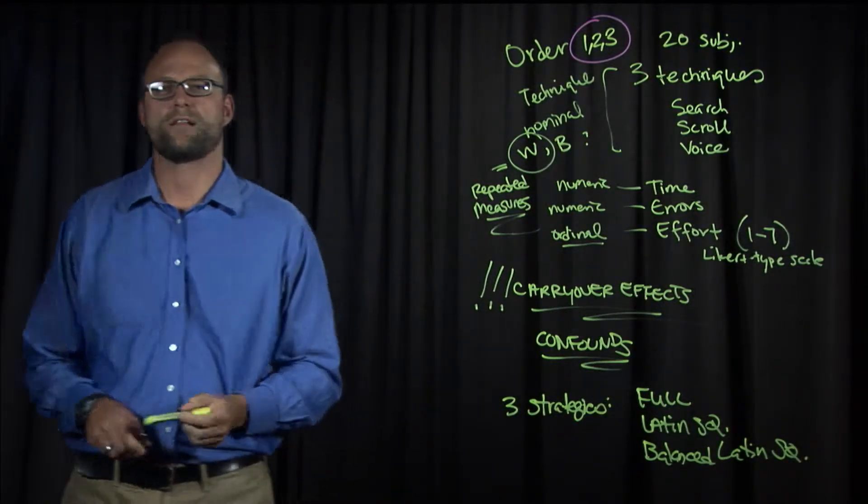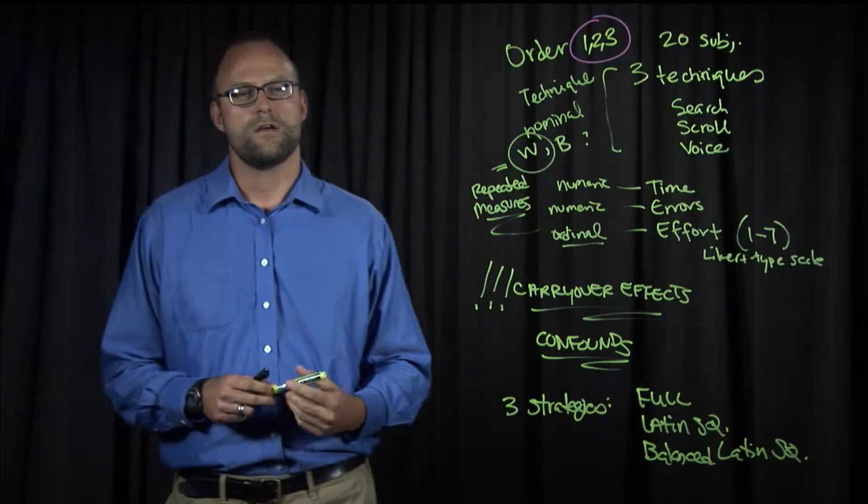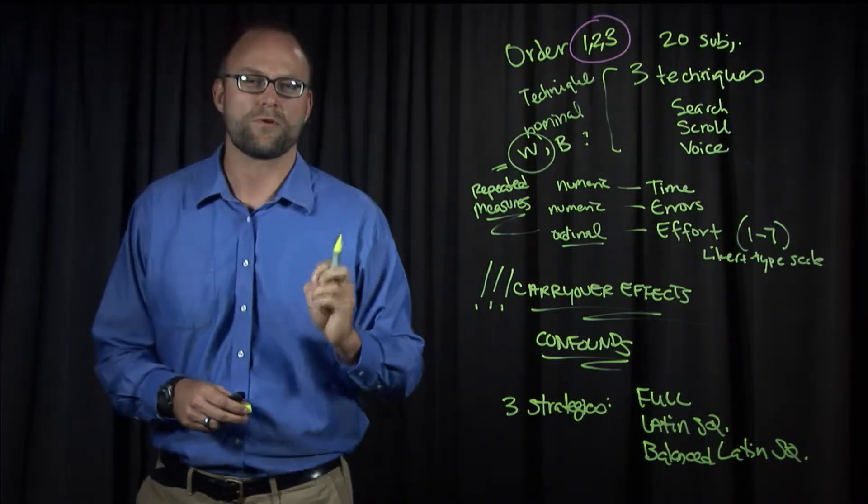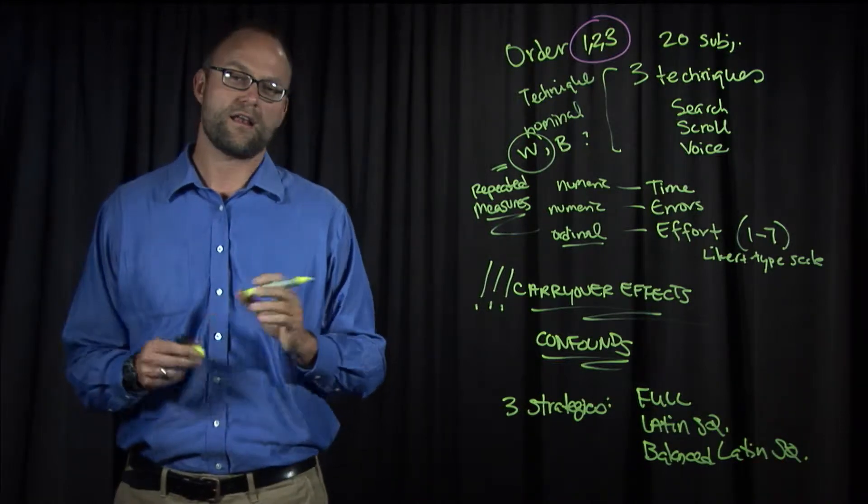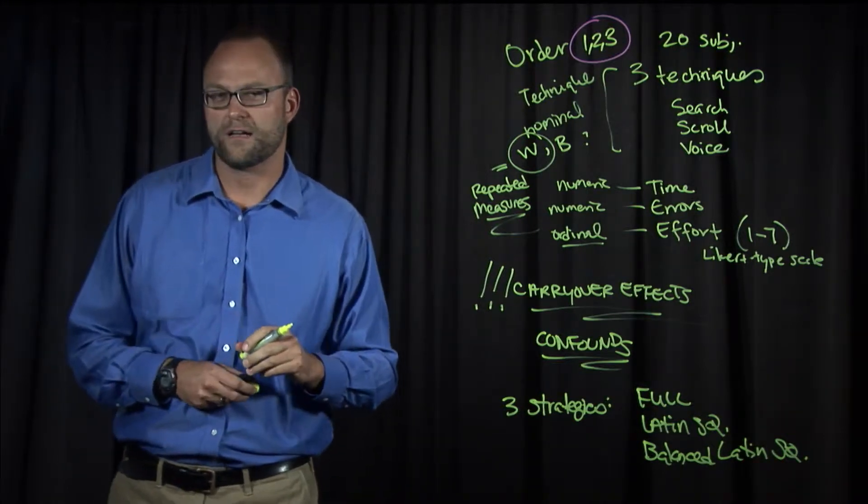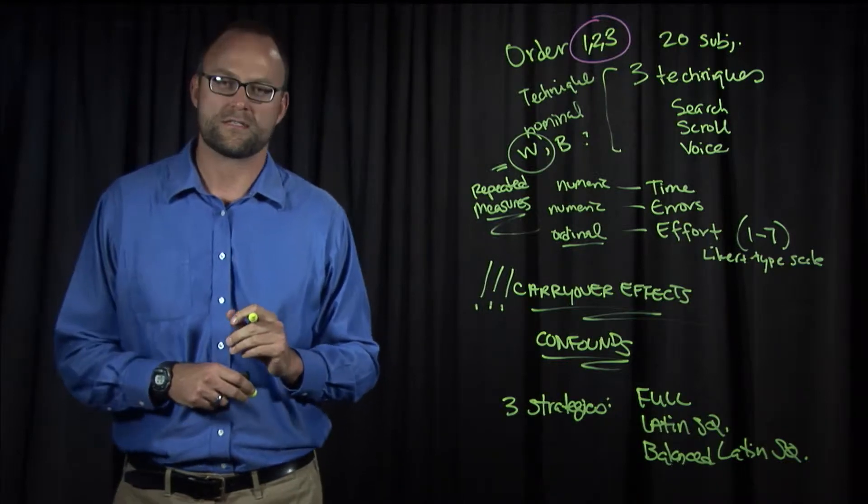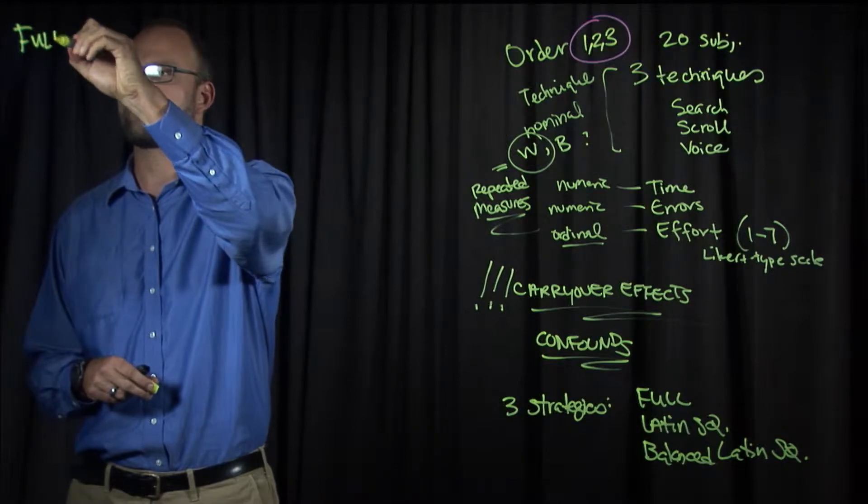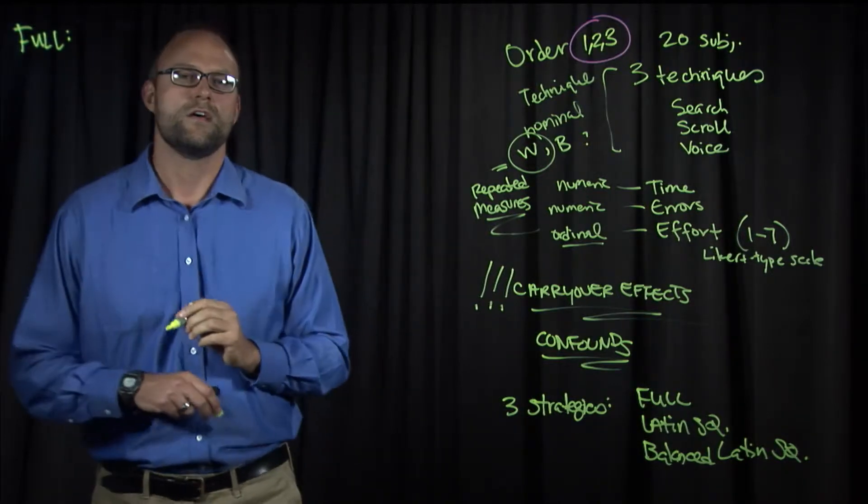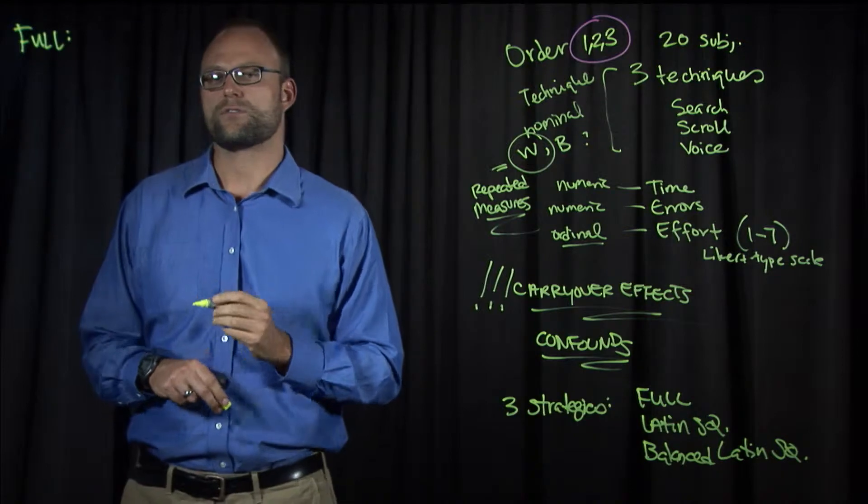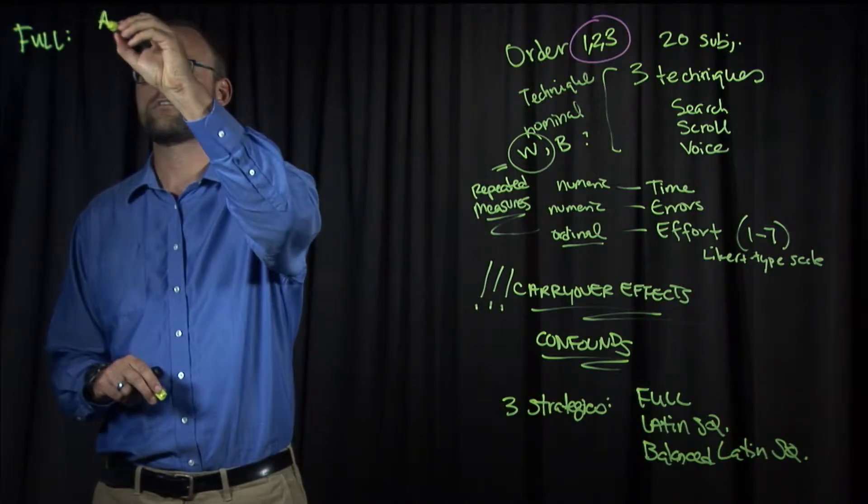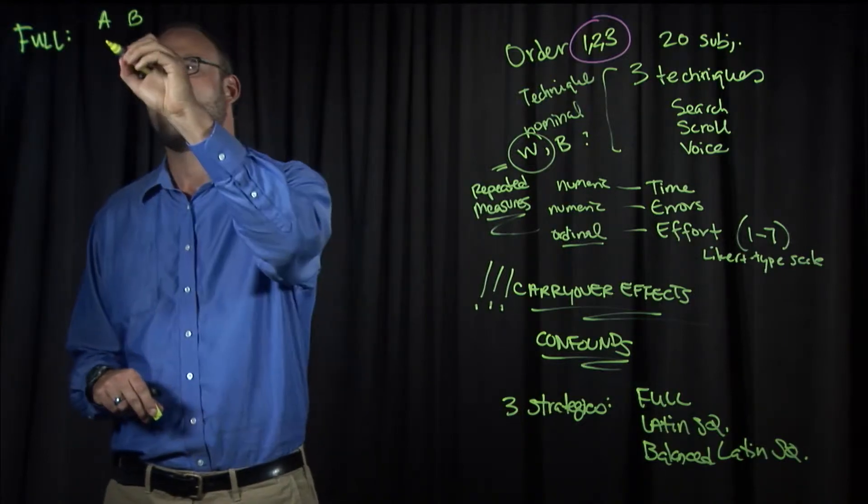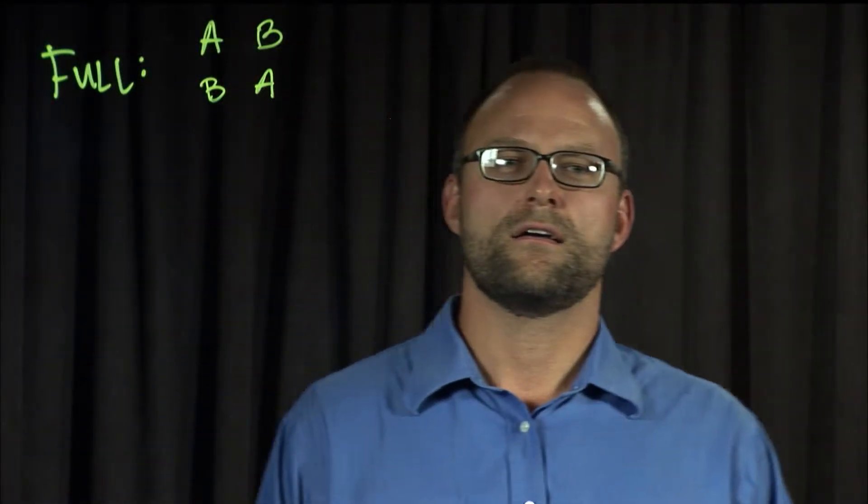Let's start with full counterbalancing. Full counterbalancing is where every condition, every possible ordering of conditions is expressed in your study. It is, when you can do it, the best way to counterbalance the presentation order of your factors. With full counterbalancing, we have every order expressed. Let's say we have two levels of a within-subjects factor, so two conditions, A and B. Full counterbalancing would present A and then B, and then B and then A to subjects.